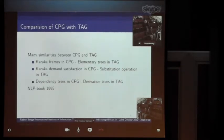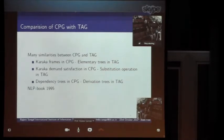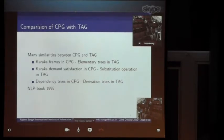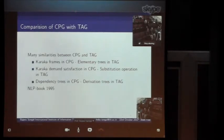One cannot work in this area without engaging with Tree Adjoining Grammar. When we compared the computational Paninian grammar and Tree Adjoining Grammar, there were corresponding elements: the demand satisfaction in computational Paninian grammar corresponds to substitution operations, and the dependency relations correspond to adjunction operations in TAG. This comparison became part of our book and later a chapter in a recent book published from MIT Press with Professor Joshi and Dr. Srinivas as editors.